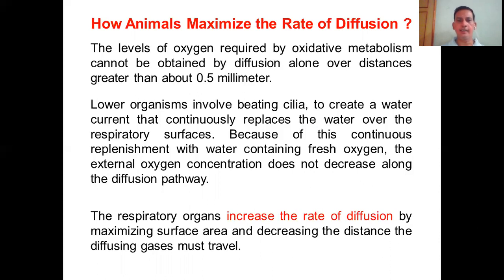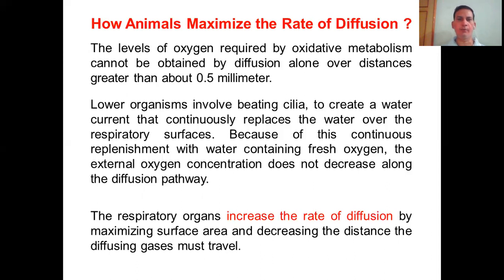In organisms such as fish, gills facilitate the increase in the rate of diffusion by maximizing surface area. Compared to simple body surface, gills or alveoli provide a huge difference in surface area relative to simple skin exposed to the outside environment. In this way, different kinds of organisms have different kinds of specialized mechanisms which facilitate the exchange of gases.